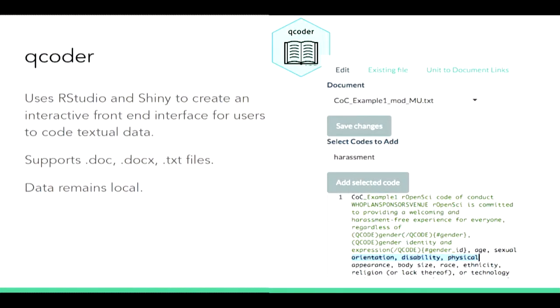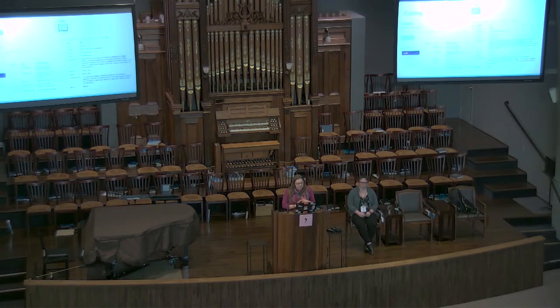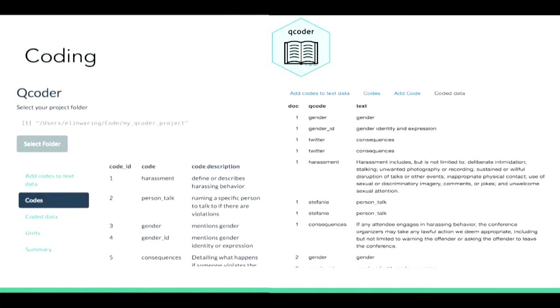We use RStudio and Shiny to create an interactive front-end interface for users. We support doc, docx, and text files, and the data remains local. There's an example of the interface right there. We have a coding process, and we're using codes of conduct as our test case and example data. That's an example of some codebooks we put together and some of the outputs we might end up getting.